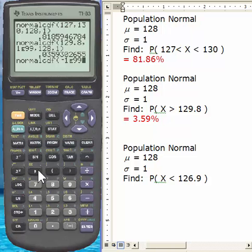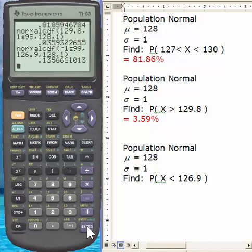Once again, zero would have worked in this case. Then a comma. Then our upper bound of 126.9, comma. Our mean of 128, comma. And then our standard deviation number one. Right parenthesis, enter. And we've got our answer. So I'll go ahead and type that in.